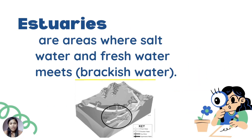Estuaries are areas where salt water and fresh water meet. Normally, running water in rivers goes into the sea. Water in estuaries is less salty. The measure of salt in water is called salinity. Thus, the estuaries have low salinity. The level of salt content of water affects the ability of the organism to survive.